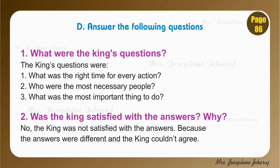Moving to D. Answer the following questions. Number 1. What were the king's questions? The king's questions were: Number 1 — What was the right time for every action? Number 2 — Who were the most necessary people? Number 3 — What was the most important thing to do? Question number 2. Was the king satisfied with the answers? Why? No, the king was not satisfied with the answers because the answers were different and the king couldn't agree with any of the learned men's answers.